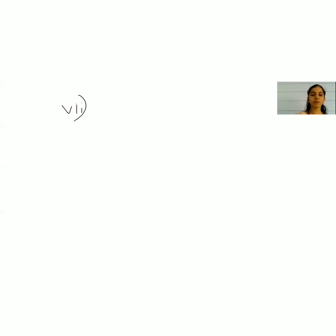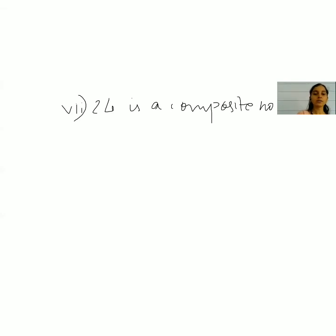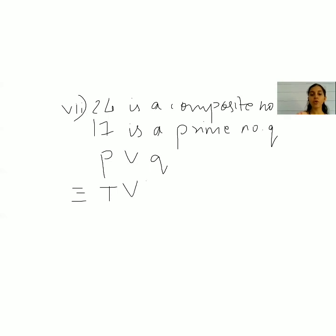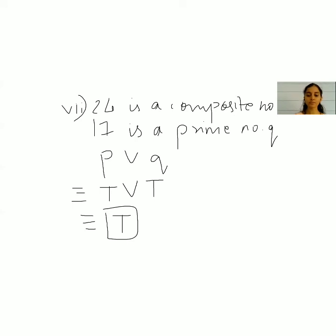The seventh one: 24 is a composite number or 17 is a prime number. '24 is a composite number' is p — true. '17 is a prime number' is q — true. True or true gives true. So the truth value of this statement is true.